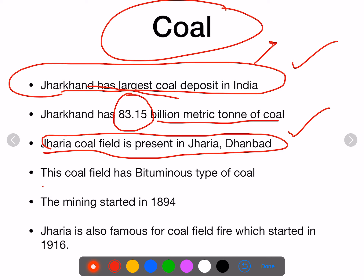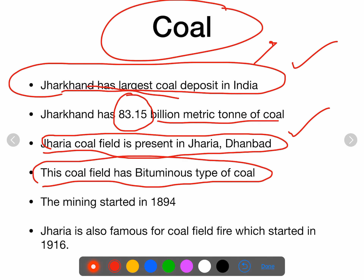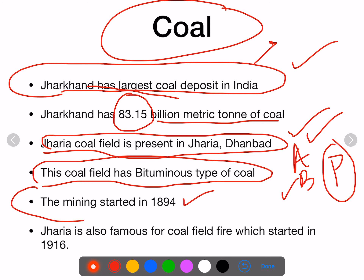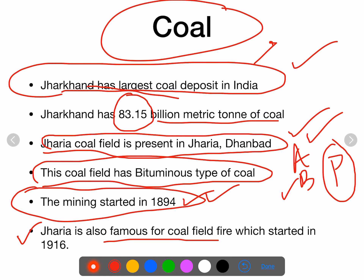The Jharia coal field has bituminous type of coal. There are three types of coal: anthracite, bituminous, and peat. Anthracite is the best quality, bituminous is good quality but less than anthracite, and peat is the worst quality. Mining in Jharia started in 1894 — more than 125 years ago. Jharia is also famous for its coal field fire.